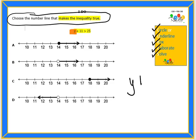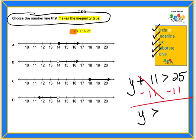Y plus 11 greater than 25. I subtract 11 from both sides. These cancel out, and Y is greater than 14.